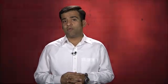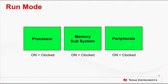Let us discuss run mode first. This mode provides normal operation of the processor and currently enabled peripherals — that is, the ones enabled in the RCGC register. The microcontroller actively executes code with maximum performance in this mode, and the system clock can be any of the available clock sources such as the main oscillator, precision internal oscillator, low frequency internal oscillator, and PLL. In the diagram shown on the screen, blocks shown in green indicate that the processor, memory, and peripherals are all powered on and are clocked.